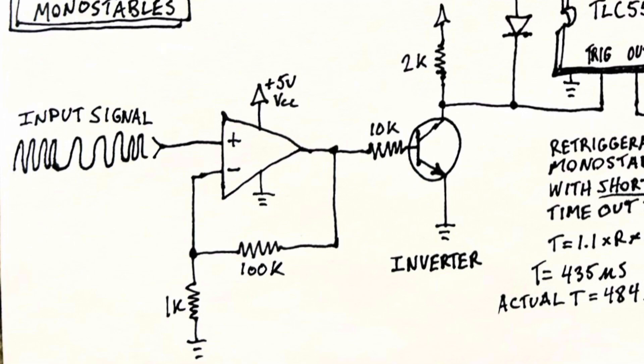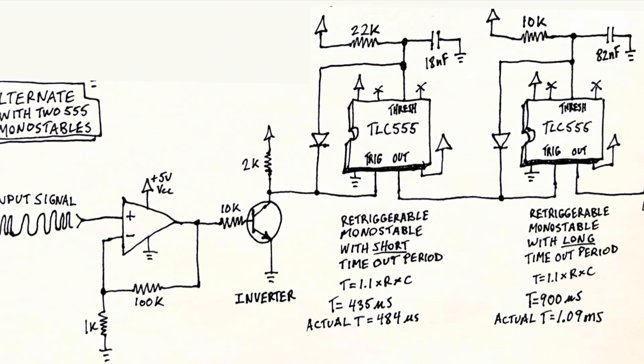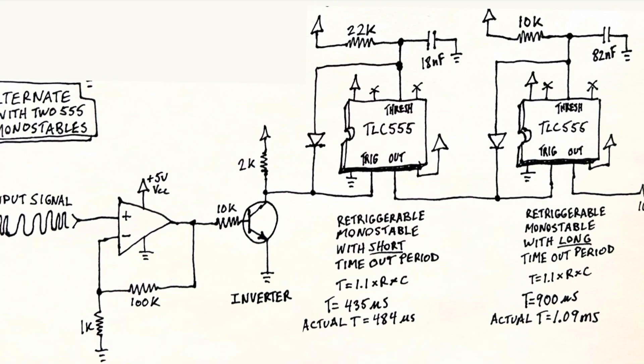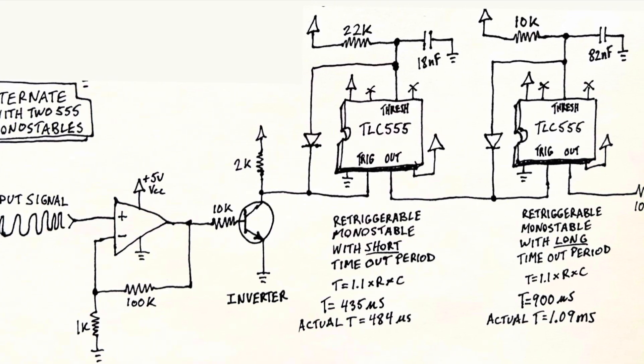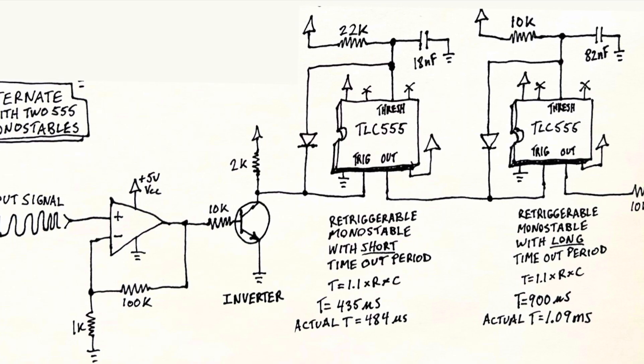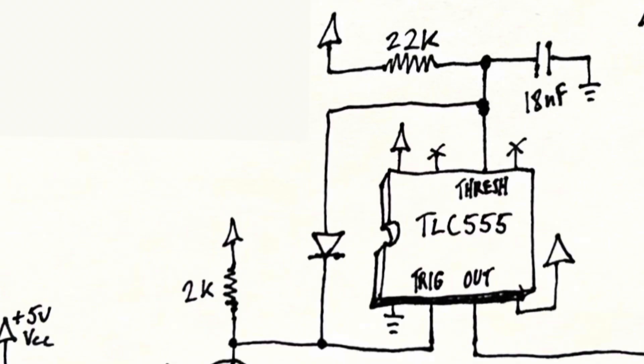The first step is to amplify the signal and get it between zero and five volts. This is done using an op-amp with a very aggressive gain — in this case a gain of 101 — which amplifies and clips the signal to between zero and 3.9 volts. Because the op-amp never quite reaches five volts, we then put it through an inverter to get a clean zero-to-five volt square wave.